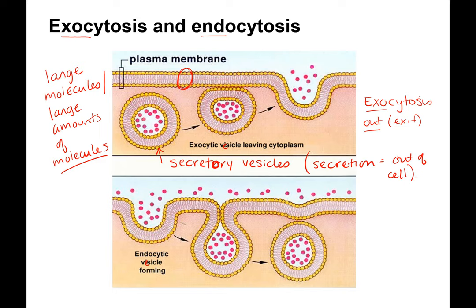For instance, your B cells that are part of your immune system make antibodies, and antibodies are secreted out of the cell through exocytosis. The antibody proteins themselves are too big to move directly through the membrane, even with a transport protein or a channel protein. So they need to go through this large or bulk transport. That's exocytosis.